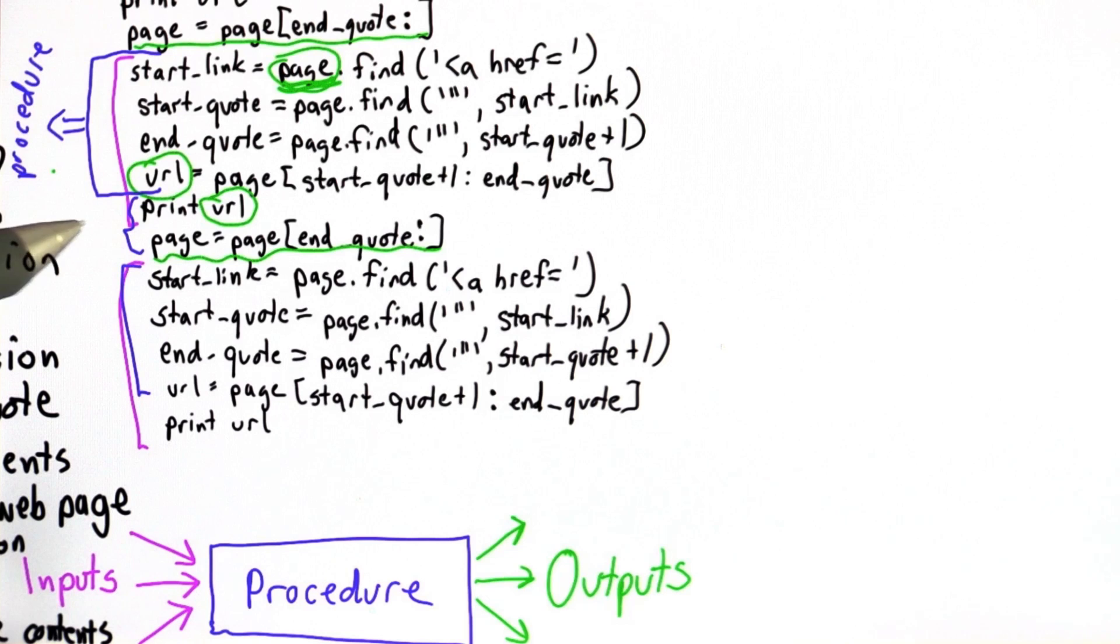We need to think about what we need to know after the code runs. We don't have access to these variables if we're making this a procedure. We need to get, as outputs, everything that we want to use after the procedure.